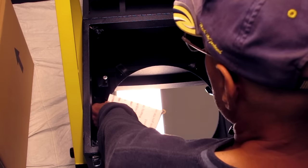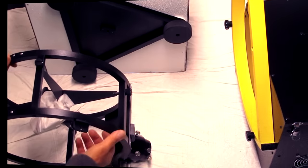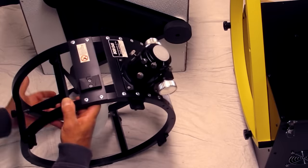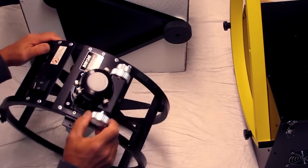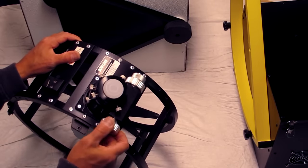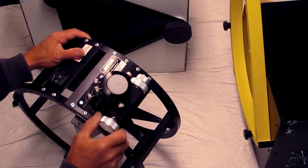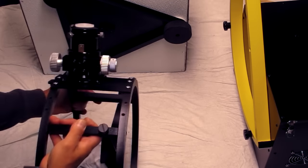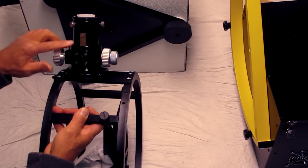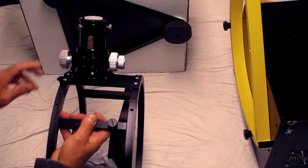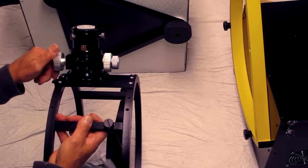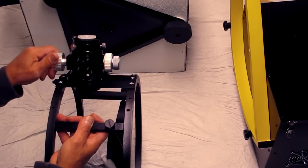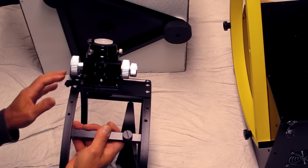Okay, so I've got the cage here. The focuser seems to be pretty nice. It's got some really smooth action, and it is a rack and pinion. And there's the rack right there. I prefer a rack and pinion, especially with a heavy eyepiece, a coma corrector, and what have you.